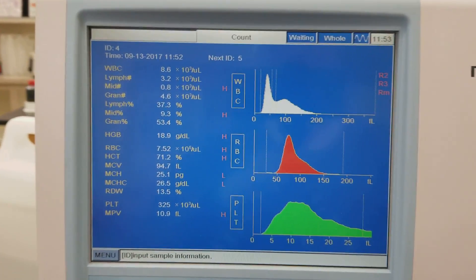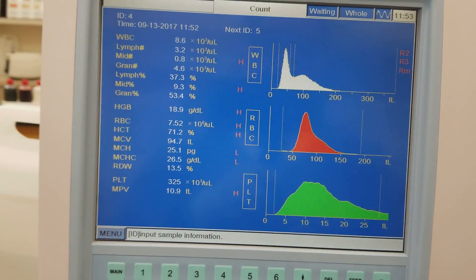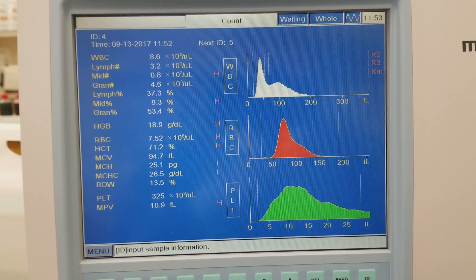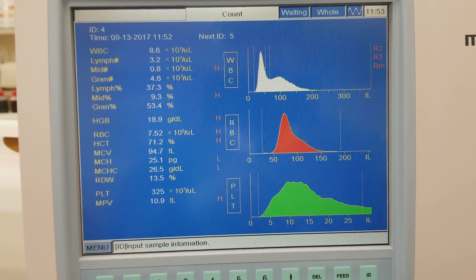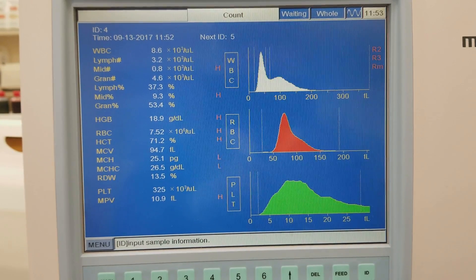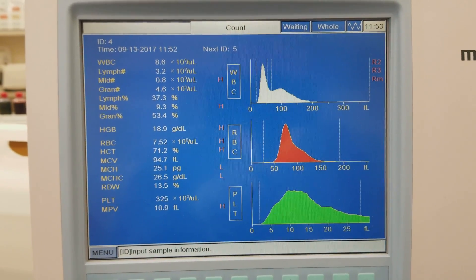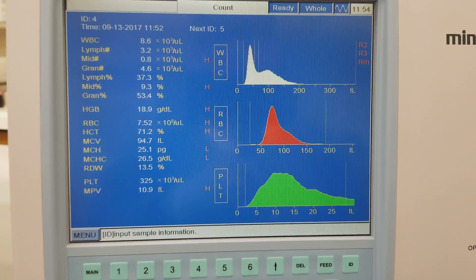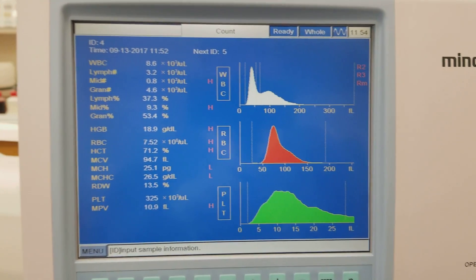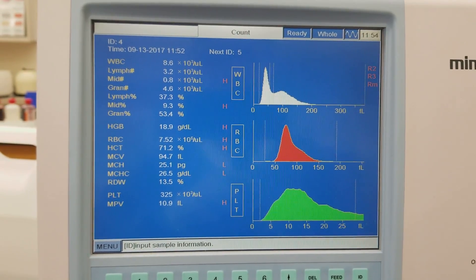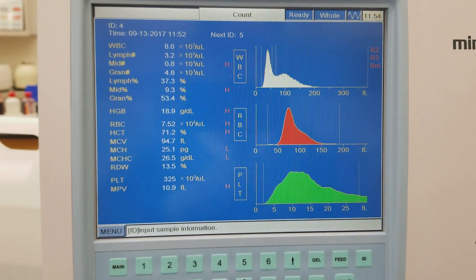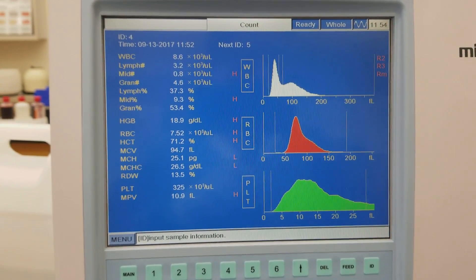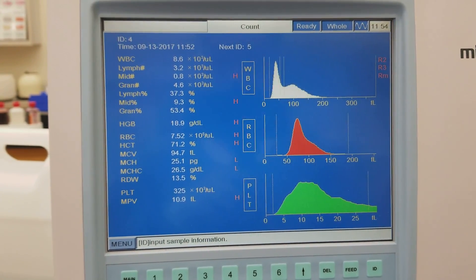I ran another normal specimen, which is basically like your QC right now, and it's still going a little higher than expected. What I'm going to do is run the easy clean cleanser. What you would want to do after maintenance of a critical part of an analyzer is to calibrate your analyzer and also run QC.